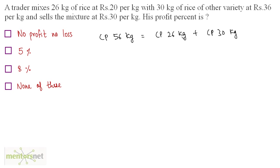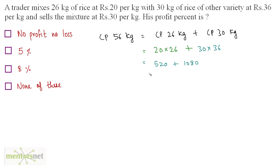The cost price of 26 kg of rice is 26 kgs bought at the rate of Rs. 20 per kg, so 20 times 26. Plus the cost price of 30 kgs bought at the rate of Rs. 36 per kg, so 30 times 36. That gives us 520 plus 1080, which equals Rs. 1600 — the cost price of 56 kgs.